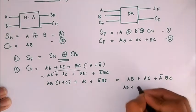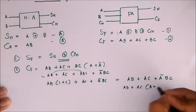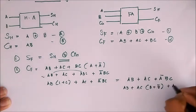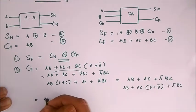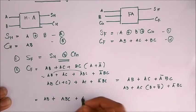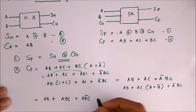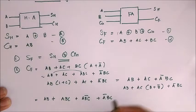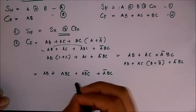Now I'm multiplying this AC with B plus B bar. That is AB plus AC into B plus B bar plus A bar BC. This would give me AB plus ABC plus A bar AB bar C plus A bar BC.